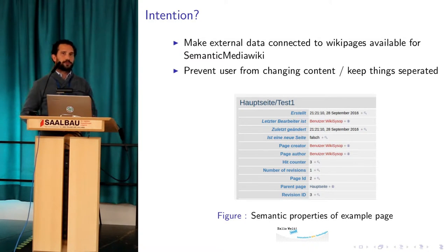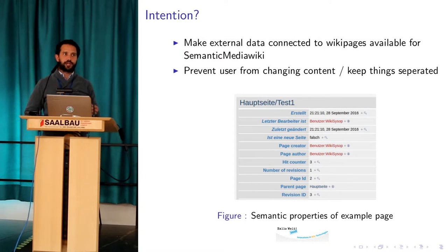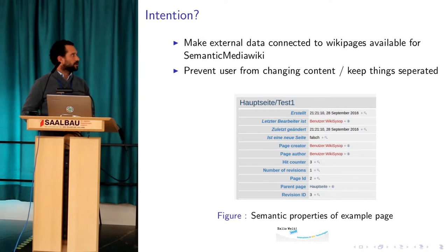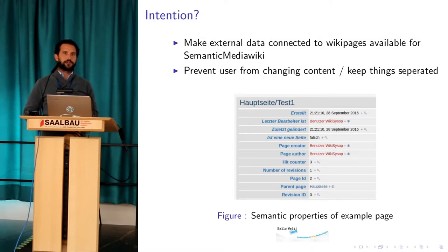It's also maybe interesting for some people to make data available which is not accessible by the user, so that the user can read it but not change it. Because if you have your data in the wiki context everybody can change it, and that's not always useful. So if you have semantic special properties it's like fixed and users have just read access to it.